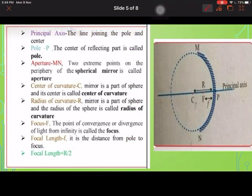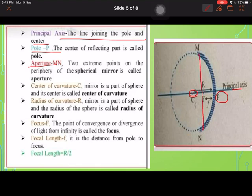Now what are the different points in this? Principal axis: the line joining the pole and center, this P and C, the line which is joining is known as principal axis. And P is known as the pole. Aperture: it is MN, the area which is used for the reflection is known as the aperture. Two extreme points. Center of curvature is a part of the sphere through which this mirror has been cut.